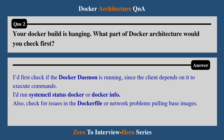Question 2: Your Docker build is hanging. What part of Docker architecture would you check first? I would first check if the Docker daemon is running, since the client depends on it to execute commands. I would run 'systemctl status docker' or 'docker info' for that. I would also check for issues in the Dockerfile or network problems pulling base images.